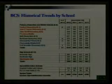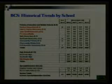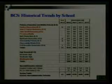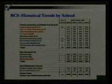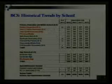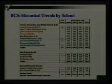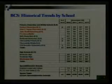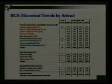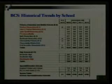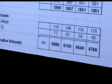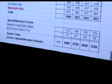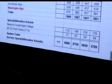Drilling down a little bit finer to look at the historical trends per school, this table shows us for the years 2009 through 2012 the membership — this is month-one ADM. A question from the audience: on this chart it shows 6,789 in the historic trends for 2013 versus 7,011 on the last chart — what's the difference? The two alternative special schools, Beaufort County Early College and BC EdTech, are not included in these counts. If you add that 187, you get back to that number.